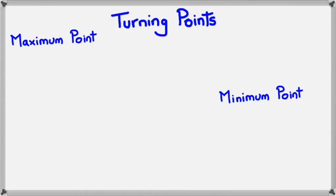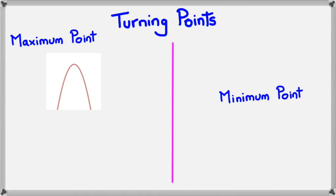I'll talk about maximum point first, and then we'll go into minimum points. A maximum point is when your graph looks like this, and it's the highest point at which you can have for the y value. Right there, that's where the maximum point is. The other way of looking at it is when the gradient goes from positive to negative, it's also considered a maximum point.